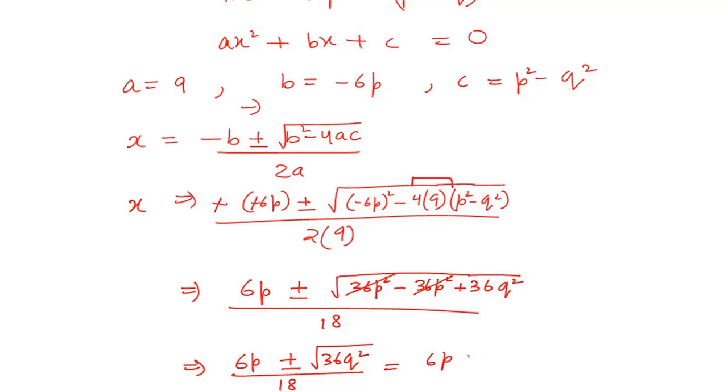Square and under root cancel. So you will get 6p ± 6q over 18.